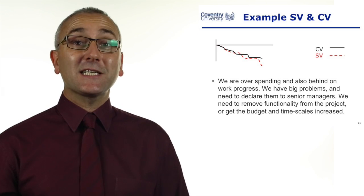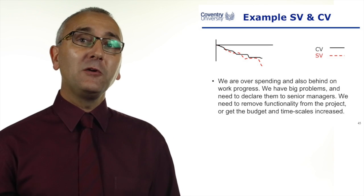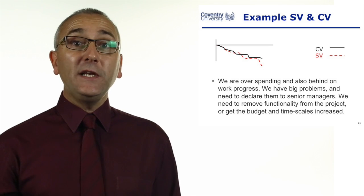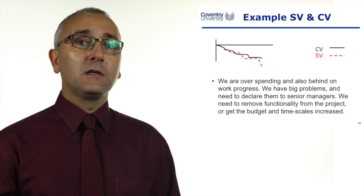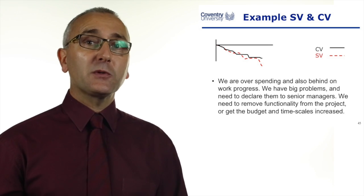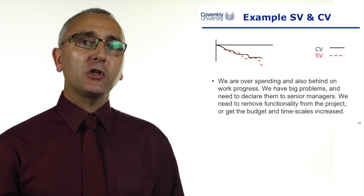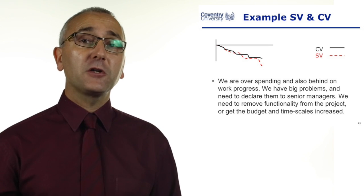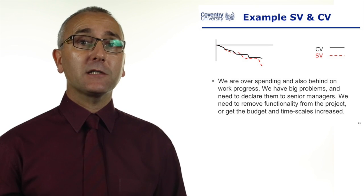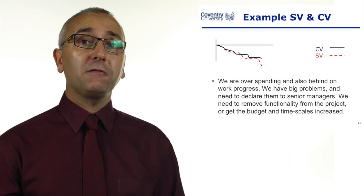This final one is the disaster scenario. We are behind schedule and we're overspending, so both graphs are going negative. The problem here is that we need money to catch back on the schedule, but we're overspent. We need to save money, but we're behind schedule. If your project is showing these characteristics, we need to go and speak to the senior managers. The only way of getting this project back on plan is perhaps to delete some of the functionality, remove some tasks, or ask for more budget or more time. But at least, if we're only a third or halfway into the project, there's time to take corrective action.